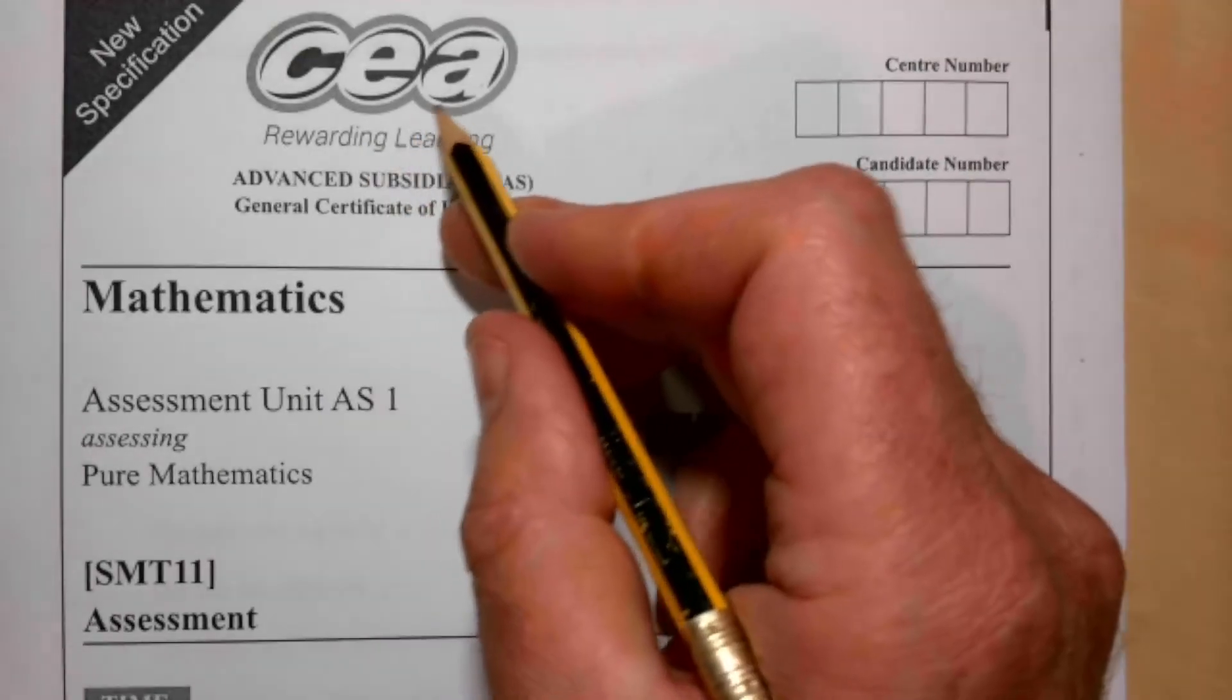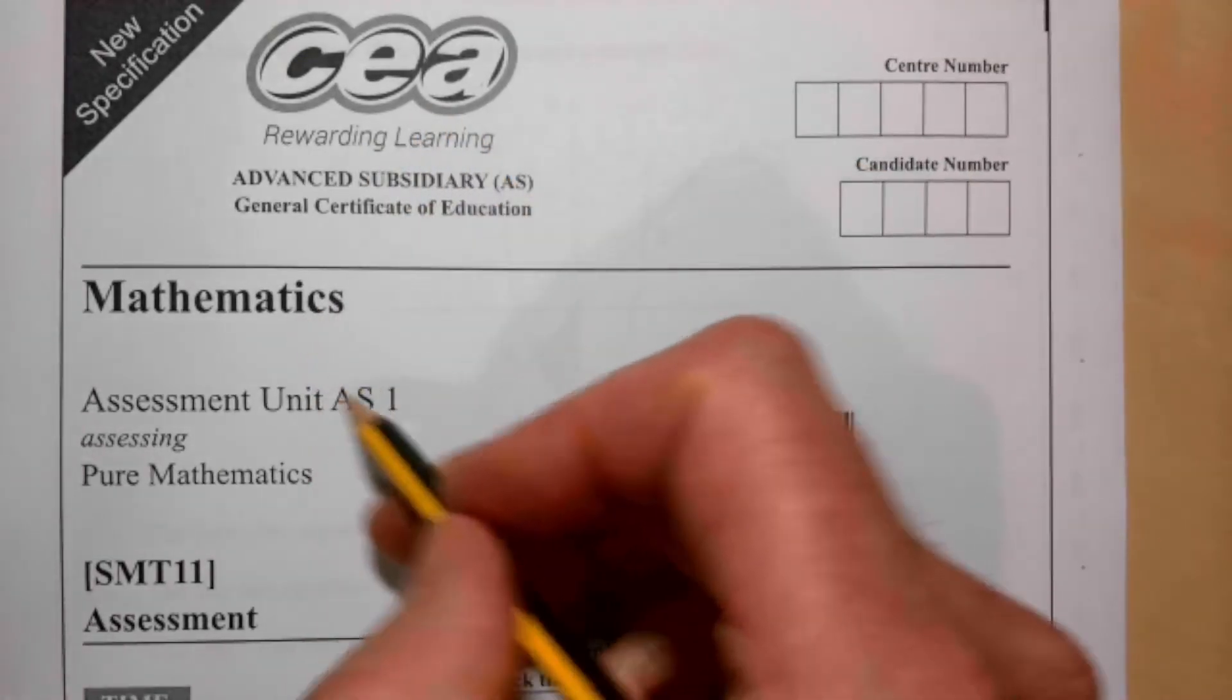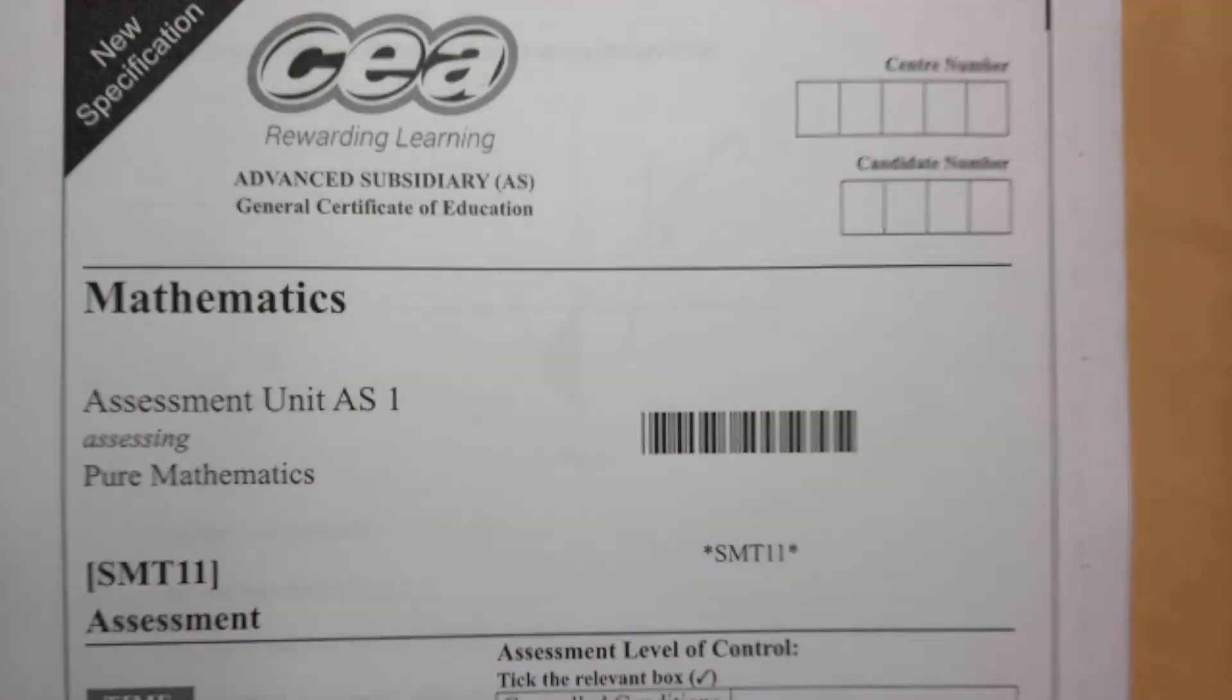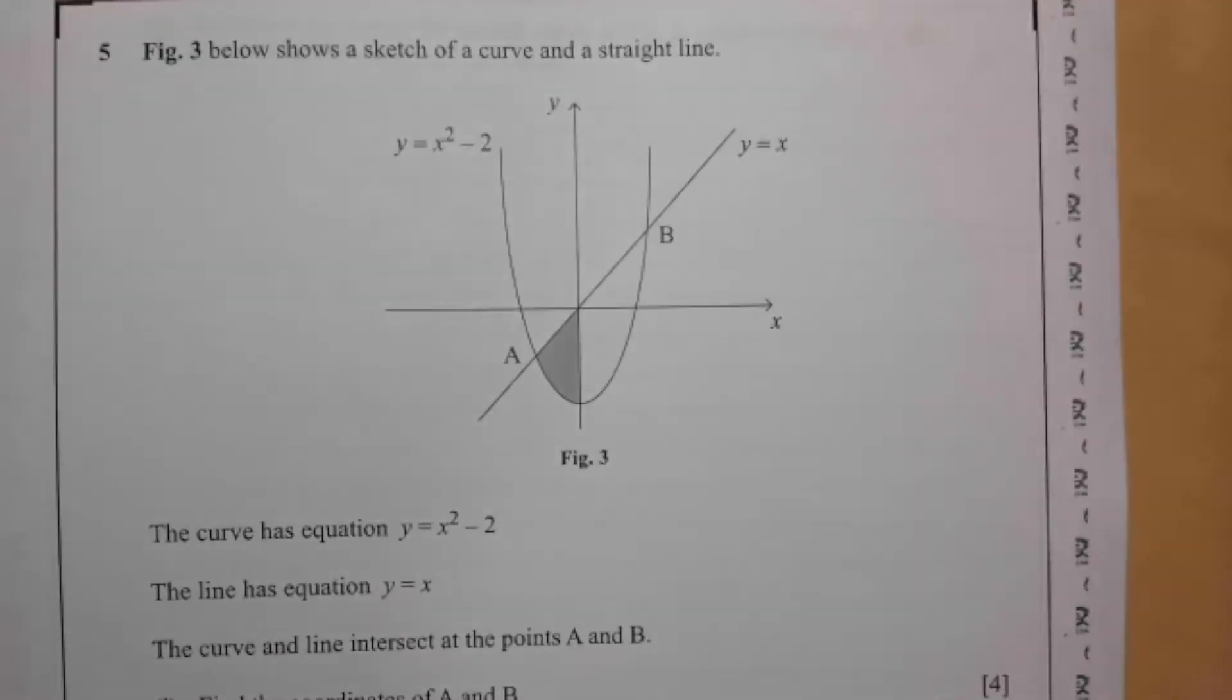This is a question from the CCEA Mathematics AS Pure past paper from 2021, and this is question number 5. So let's take a look.